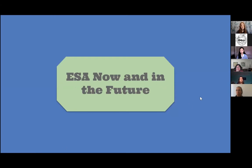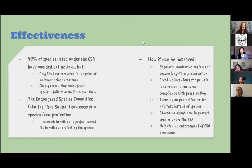So how effective is the Endangered Species Act? 99% of species listed under the Endangered Species Act have avoided extinction, which is great. However, only 3% have actually recovered to the point of no longer being threatened or endangered and being delisted. Simply putting these species on a list and recognizing that they are endangered fails to actually start to recover them — it takes more efforts beyond that.